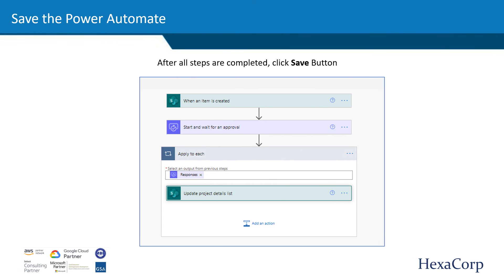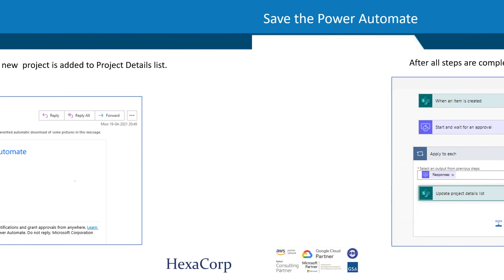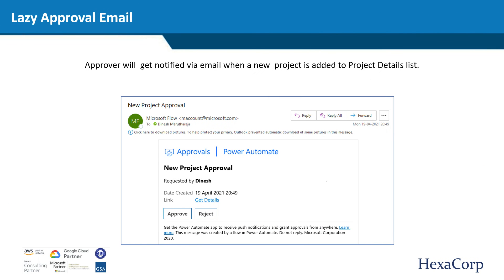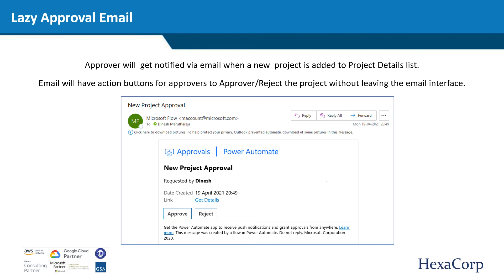After all the previous steps are completed, click the save icon to save the flow. When a new project is added to the project details list in SharePoint, approvers will get an email notification. The email content will have action buttons for approvers to approve or reject the project and provide comments, all without leaving the email interface.